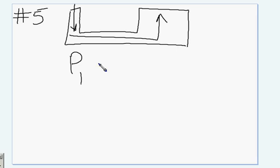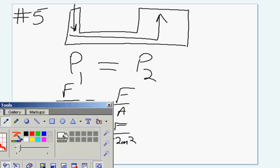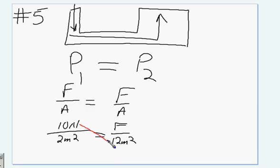Therefore, it's a ratio. P1 equals P2. Force over area equals force over area. So we have 10 newtons divided by 2 square meters equals force over 12 square meters. We have a ratio here. So we cross-multiply.